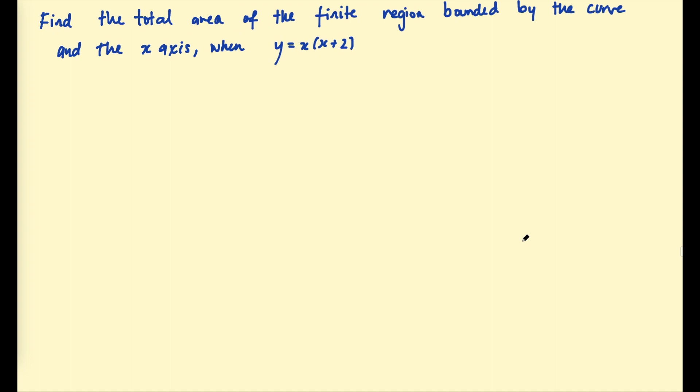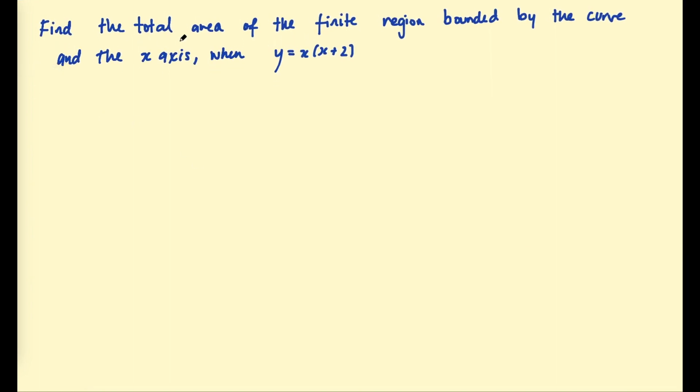Let's have a look at some examples where some of the area is below the x-axis, or all of the area. This question says, find the total area of the finite region bounded by the curve and the x-axis when y = x(x+2). Just a quick note on the wording used. When it says total area of the finite region, that means any area bounded by the curve. So let's sketch this quickly. We know that it's a positive quadratic and it has a root at negative 2 and 0. So this area is what we call a finite region. You could say this area is also underneath the curve, but it's not a bounded finite region. Just a note on that wording there, just to make sure you're understanding what the question is asking.